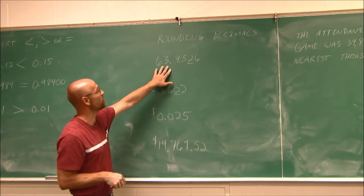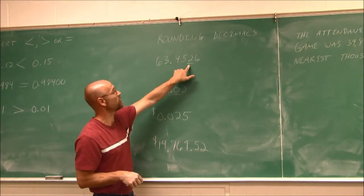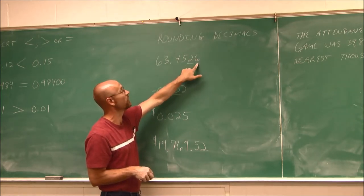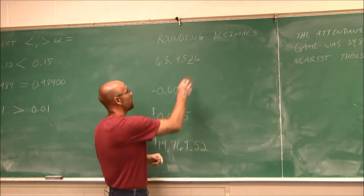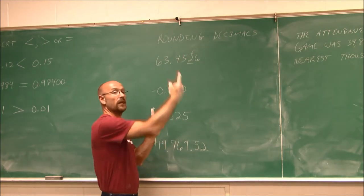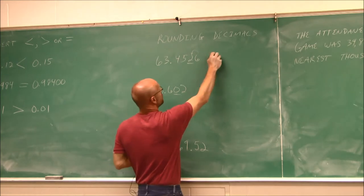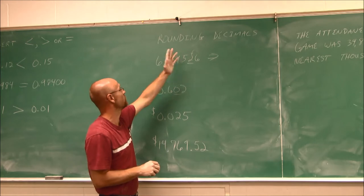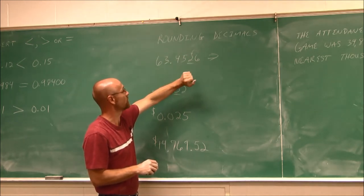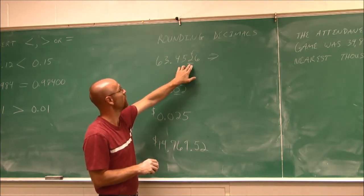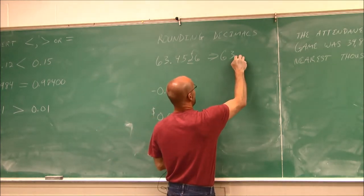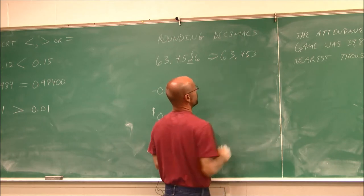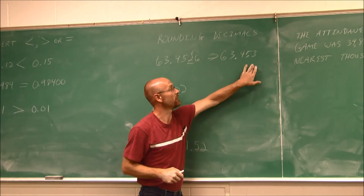So if we're asked to round this number to the thousandths, I just look at the value to the right. Since this is 5 or greater, I would round this value up — I like to put a little arrow to show I'm rounding up. So 63 and 4,526 ten-thousandths would then round to 63 and 453 thousandths.